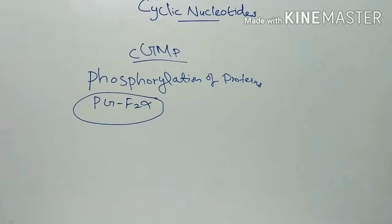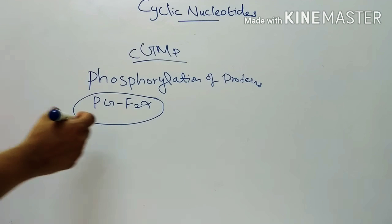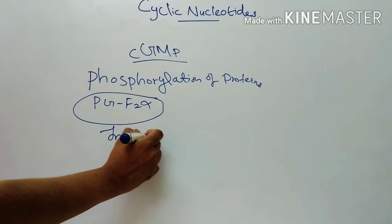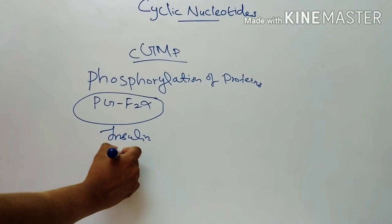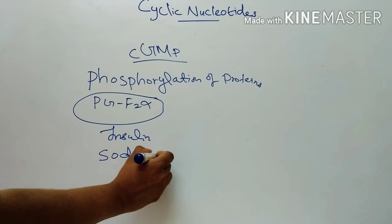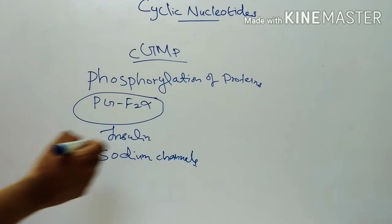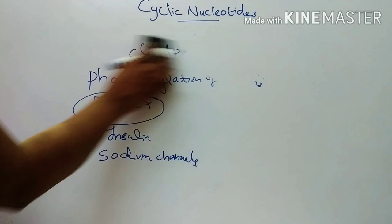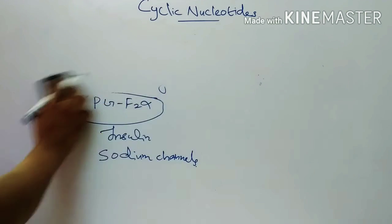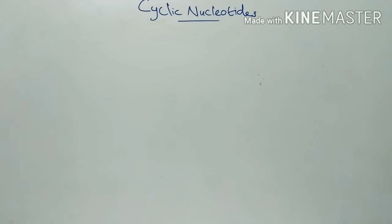Insulin action in certain tissues is mediated through cyclic GMP. Cyclic GMP also acts as a second messenger in regulating the opening and closing of sodium channels. This concludes the discussion on cyclic nucleotides. Thank you for watching.